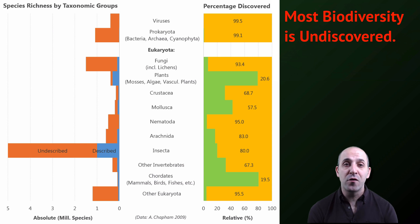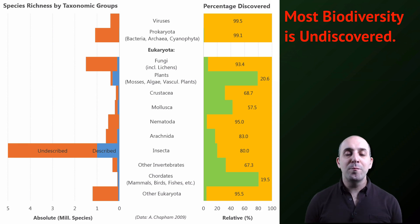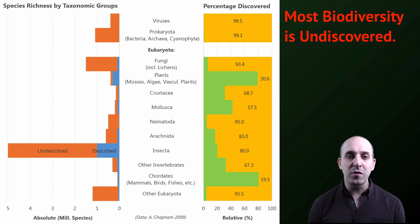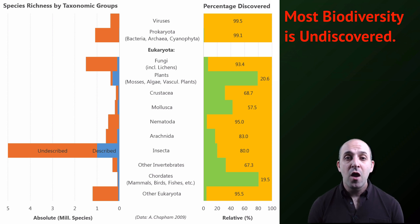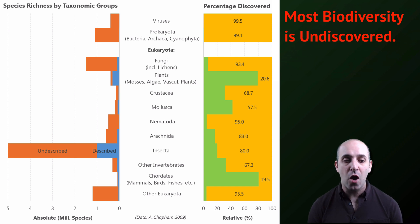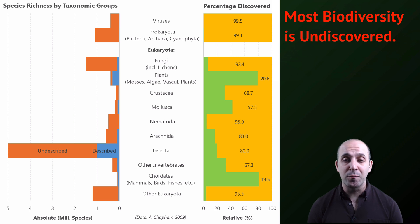We have some understanding of where the planet's biodiversity is, but importantly most of it remains undiscovered. The larger macroscopic organisms have on the whole been described pretty well, but microscopic organisms and species in hard-to-access places remain undiscovered. This graph shows the various percentages of species discovered versus those that remain undescribed, with the yellow area representing the unknown — a tremendous amount of undiscovered biodiversity still awaiting biological discovery.